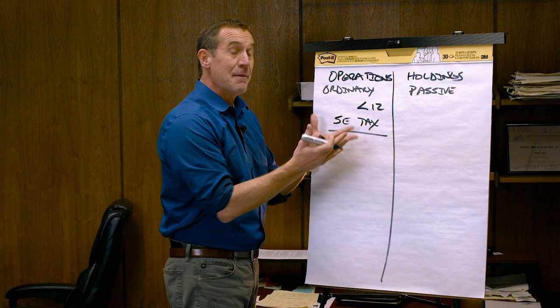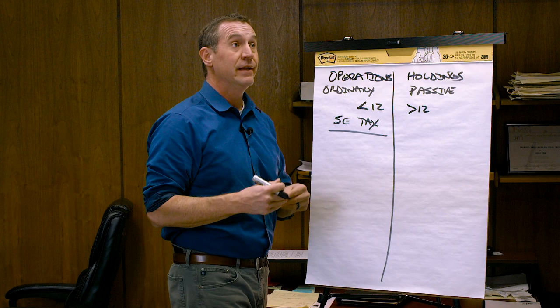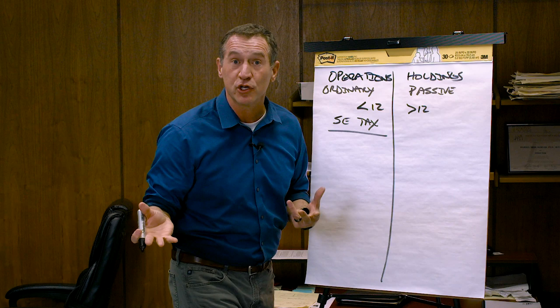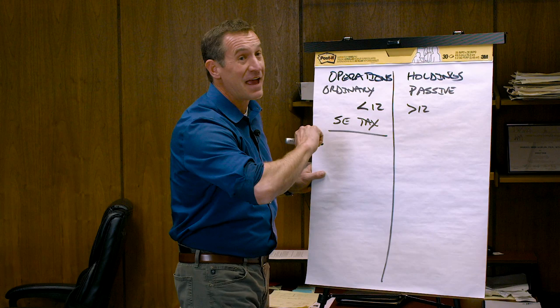Passive income is something you hold more than 12 months and again the asset's doing the work for you. This could be interest, points, dividends, capital gain, appreciation, rent, long-term holding type assets greater than 12 months and there's no self-employment tax. That's good. The asset's doing the working for you, not you.